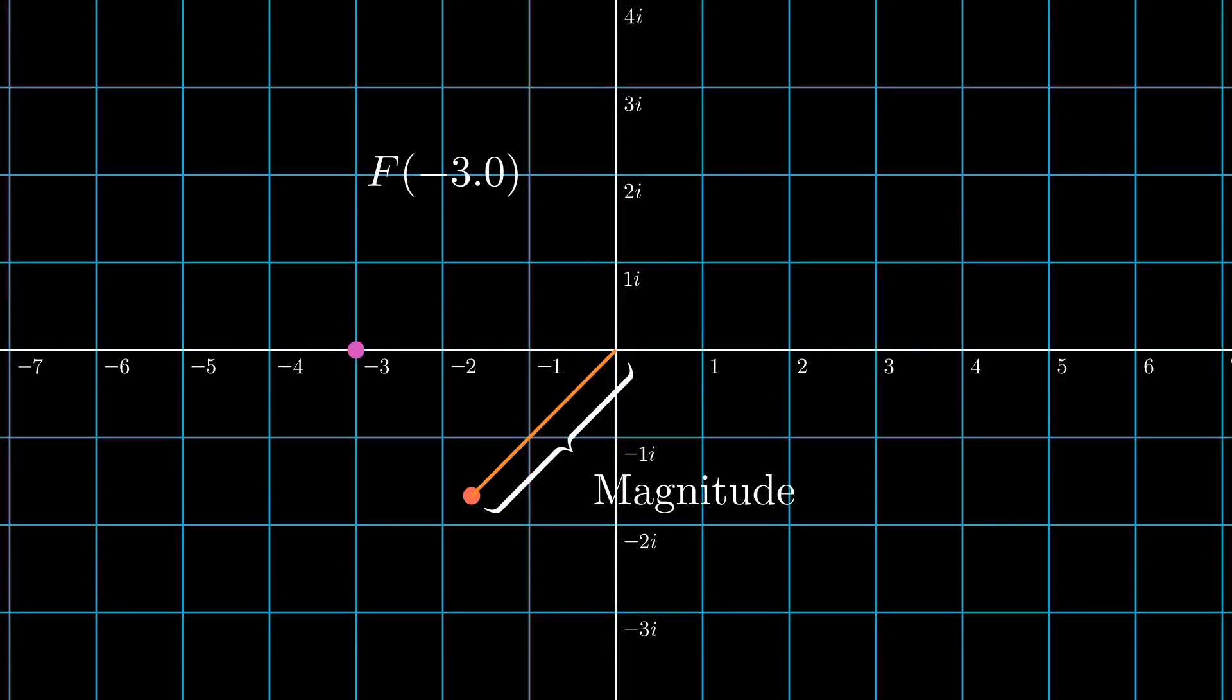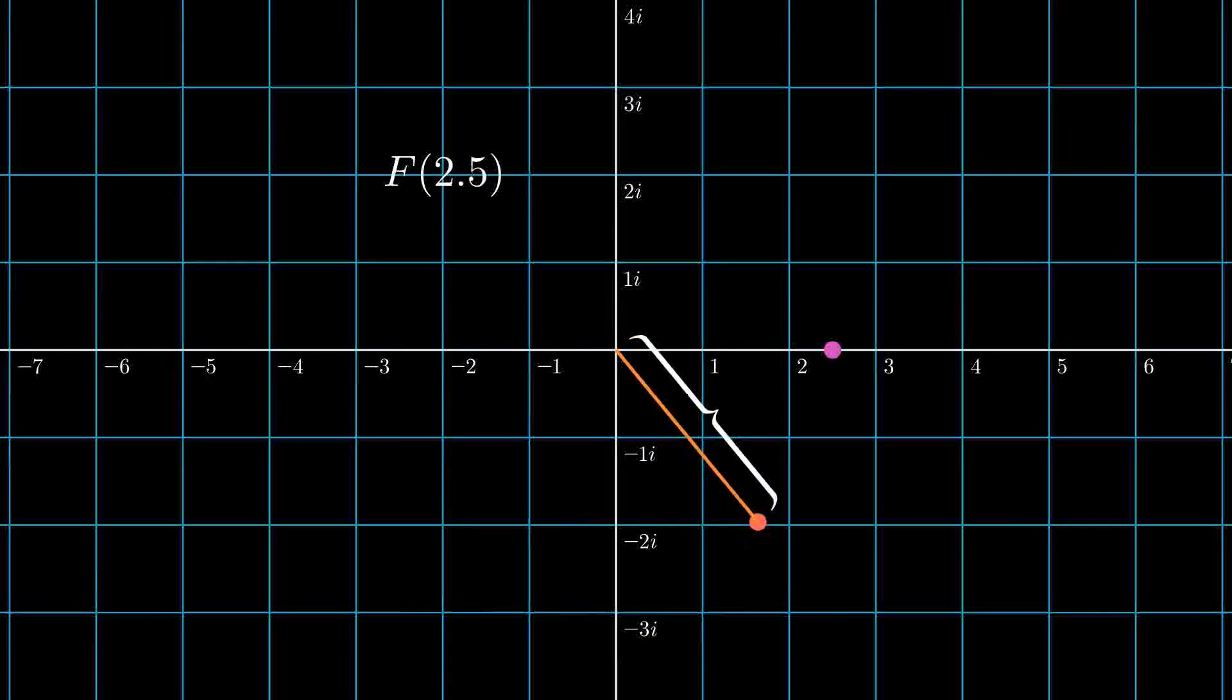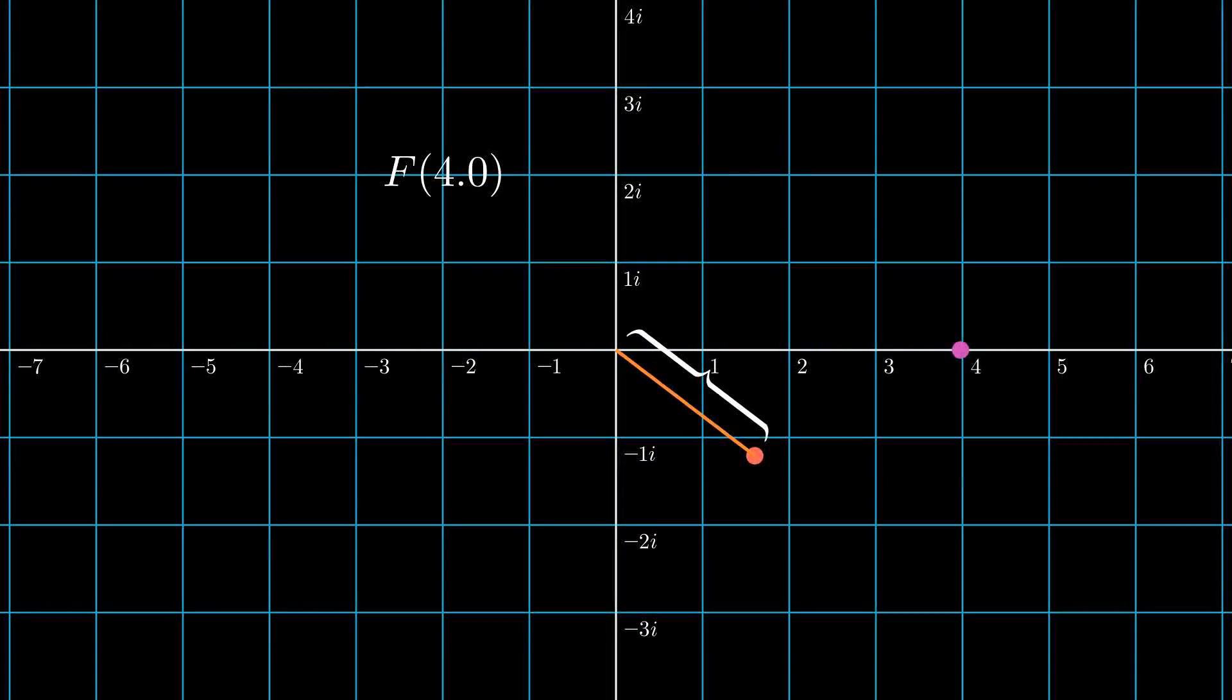That's how Fourier transform graphs are made. For each input on the x-axis we look at the magnitude of the output and plot it on the y-axis.